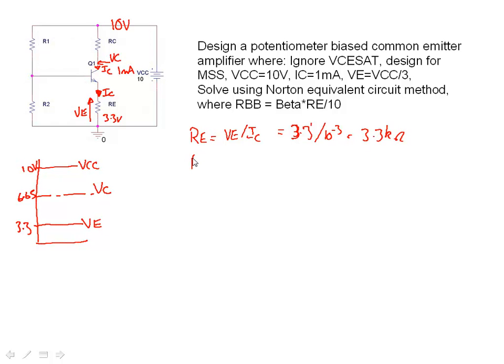Now let's calculate RC. That's VCC minus the absolute voltage of the collector all divided by IC. So that's 10 minus 6.65 all divided by 10 to the minus 3, and that comes out at 3.35 k.